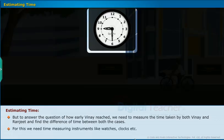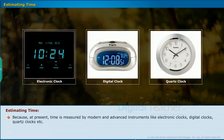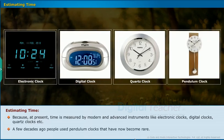For this, we need time measuring instruments like watches, clocks, etc. Because at present, time is measured by modern and advanced instruments like electronic clocks, digital clocks, quartz clocks, etc. A few decades ago, people used pendulum clocks that have now become rare.